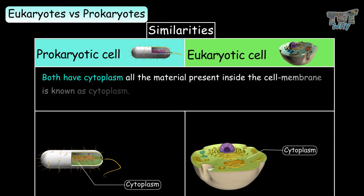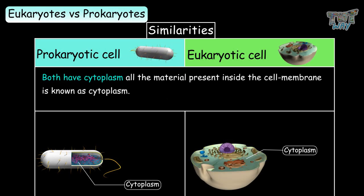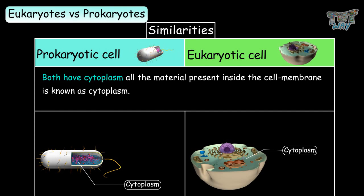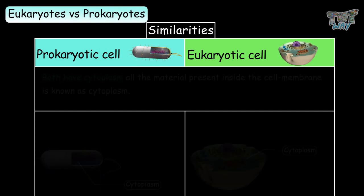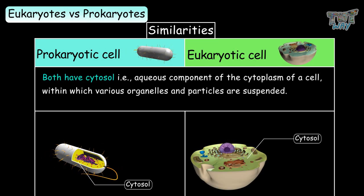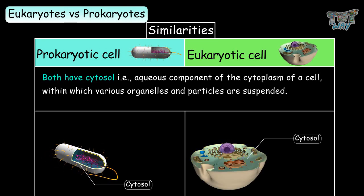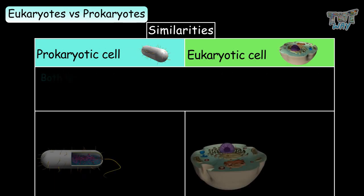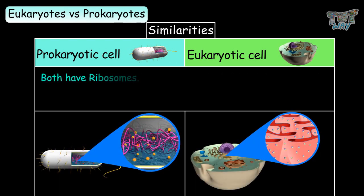Both have cytoplasm — all the material present inside the cell membrane, though the nucleus is not considered part of the cytoplasm. Both have cytosol, the aqueous component of the cytoplasm within which all other parts of the cell are suspended. Both also have ribosomes.